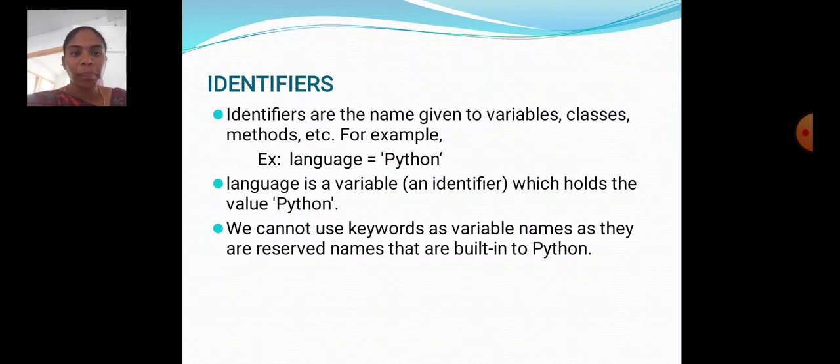Next, identifiers. Identifiers are the name given to a variable, classes, methods, etc. For example, language equal to Python. Language is a variable which holds the value Python. We cannot use keywords as variable name as they are reserved names that are built into Python.